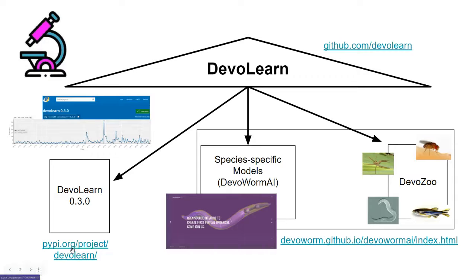You can find it on pypi.org under the project DevoLearn. We've had many contributors, including people applying for GSOC 2021 who have also made contributions to the code base. At the top you can see the number of downloads of the package, and you can see it has increased since January as we've been getting people involved and building it into something more substantial.